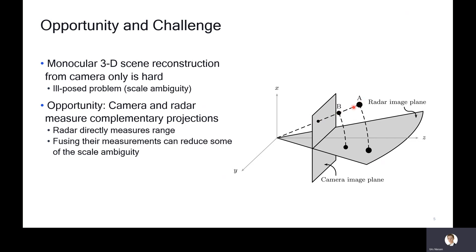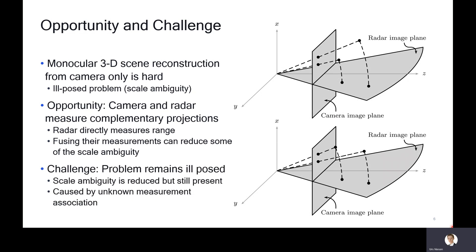The opportunity is that the camera and radar sensors measure complementary projections. The radar directly measures the range, which you don't observe at all in the camera. Therefore, fusing their measurements can reduce some of the scale ambiguity. For example, these two objects A and B that have the same projection onto the camera plane have very different projections onto the radar image plane, so you can potentially disambiguate them. However, the problem is not simple. The challenge is that the problem remains ill-posed. The scale ambiguity is reduced but still present.